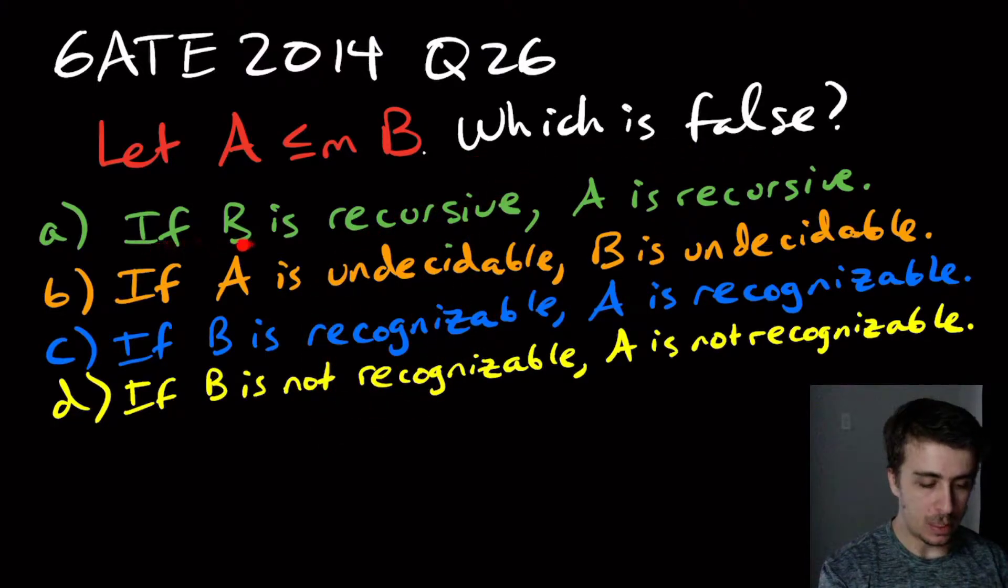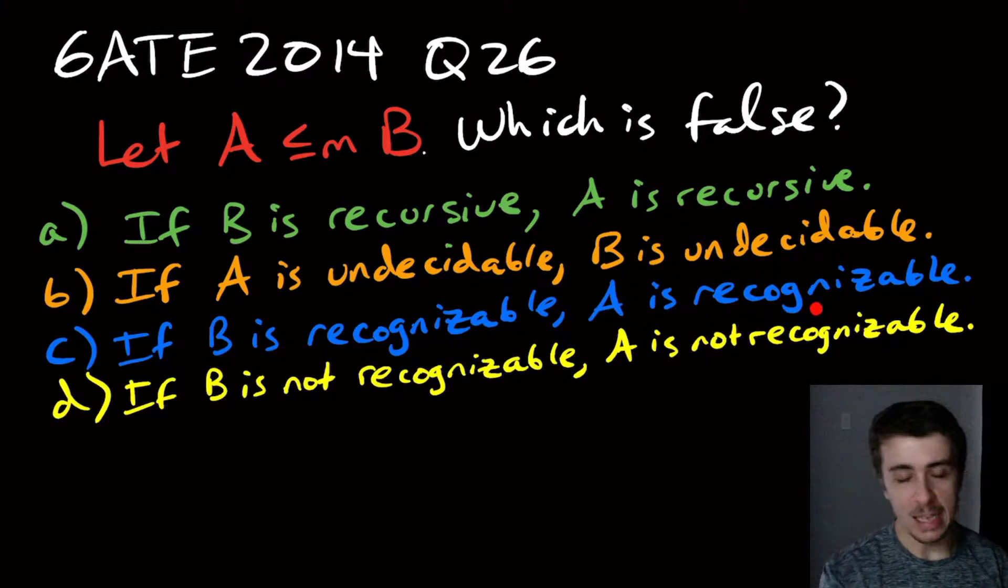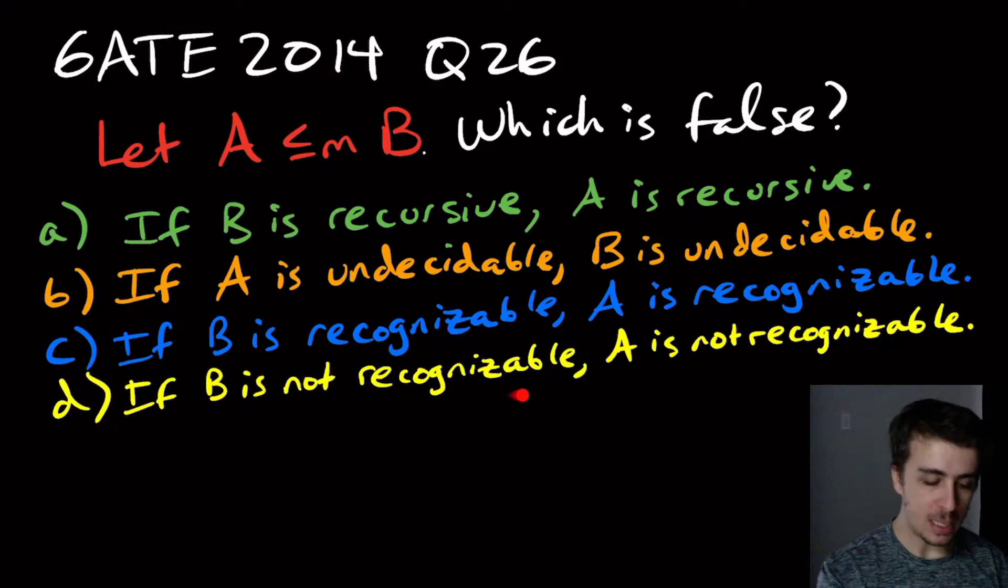So the first one is, if B is recursive, another word for decidable, then A is decidable. So if B is decidable, A is. If A is undecidable, then B is also undecidable. If B is recognizable, A is recognizable. And if B is not recognizable, then A is not recognizable.